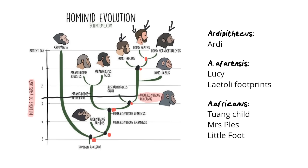There are many other things they can ask you, including names of famous and well-known fossils. For Ardipithecus, there's really only one you need to know: Ardi. For Australopithecus afarensis there is Lucy and the Laetoli footprints. For A. africanus there's the Taung Child, Mrs. Ples, and Little Foot. And yes, you will also need to know who discovered them and in what country they were discovered.